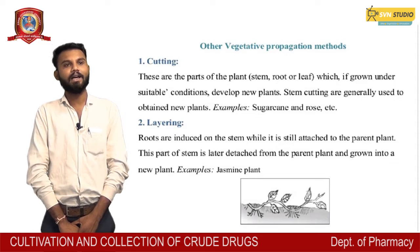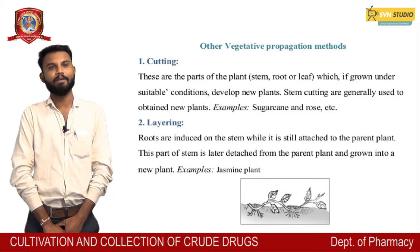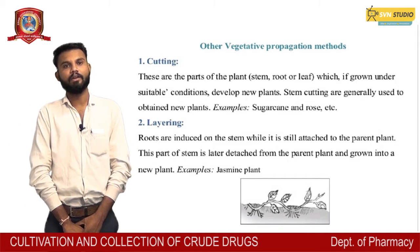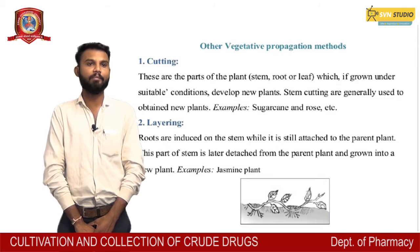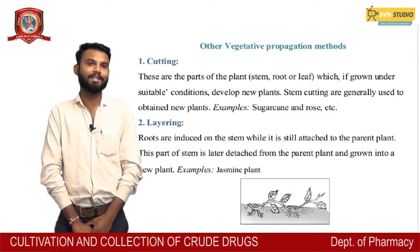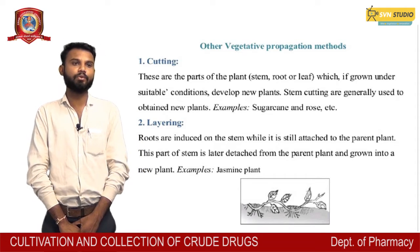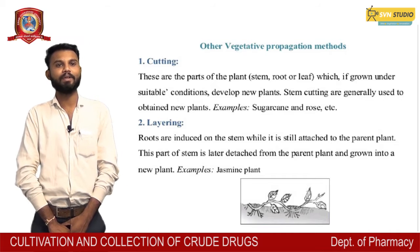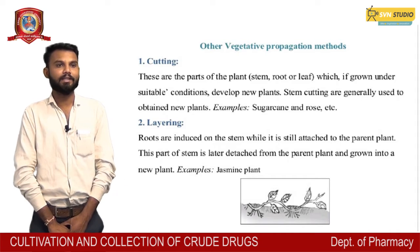Other vegetative propagation methods: 1. Cutting — these are parts of the plant which grow under suitable conditions to develop new plants. Stem cuttings are generally used to obtain new plants, e.g., sugarcane and rose.